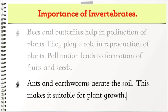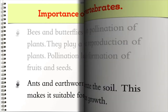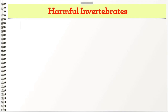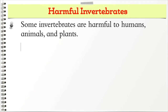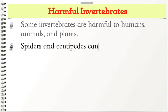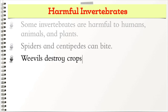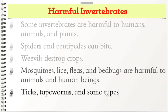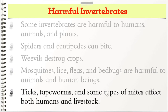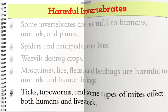Ants and earthworms aerate the soil, making it suitable for plant growth. Some invertebrates are harmful to humans, animals, and plants. Spiders and centipedes can bite. Weevils destroy crops. Mosquitoes, lice, fleas, and bedbugs are harmful to animals and human beings. Ticks, tapeworms, and some types of mites affect both humans and livestock.